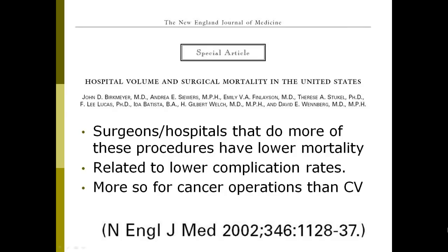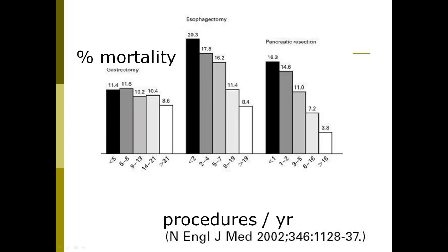One thing we know is that surgeons and hospitals that do more of these procedures have better results — lower mortality rates and fewer complications. This is even more so for cancer operations than for cardiovascular operations. As surgeons perform more gastrectomies, esophagectomies, or pancreatic resections, the mortality rate goes down. So practice seems to make perfect.